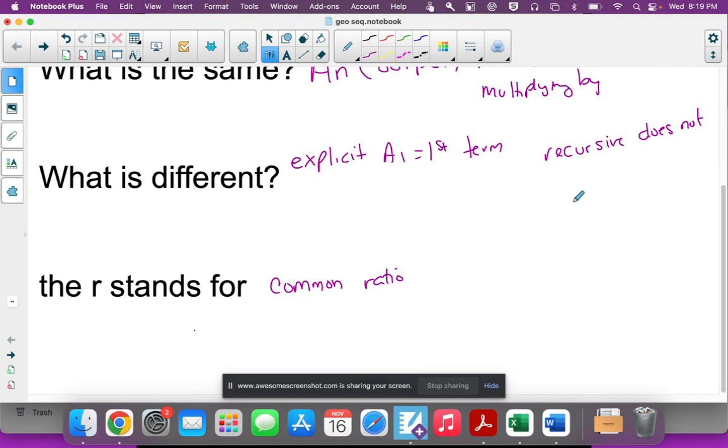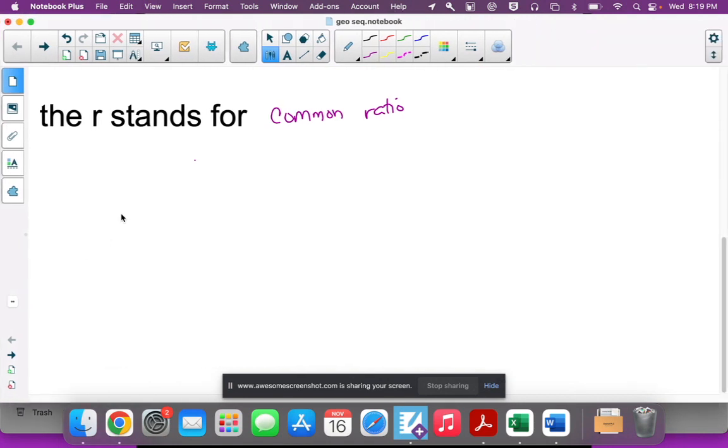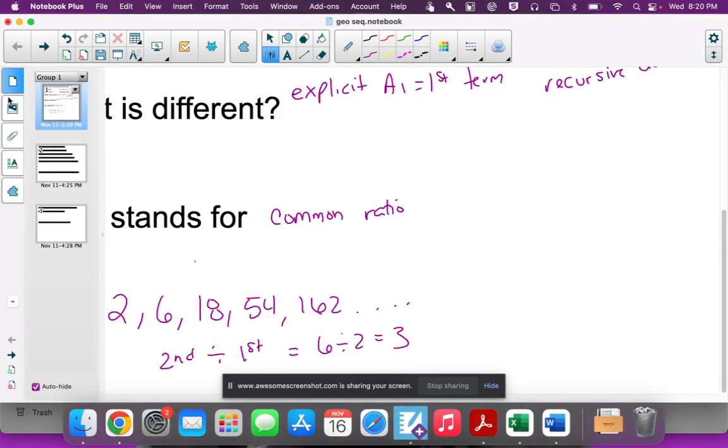When you were dealing with arithmetic and trying to figure out the common difference, you had to subtract. Now you're going to divide - you do the opposite. So instead of subtracting the second term minus the first, you'll divide the second term by the first. In this case, 6 divided by 2 is 3, so I'm multiplying each of these numbers by 3 to get to the next number.